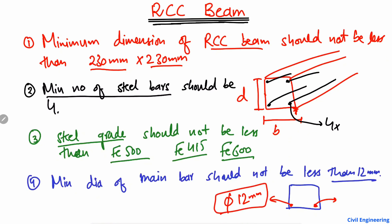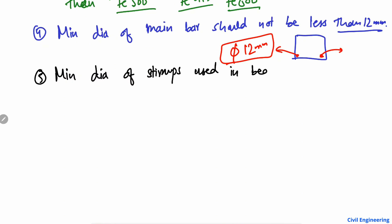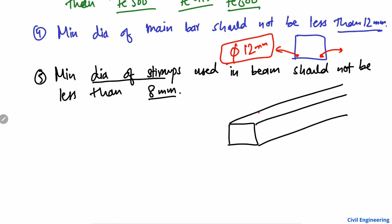The fifth point is that the minimum diameter of stirrups used in the beam should not be less than 8 millimeters. Stirrups are provided vertically around the beam to take the shear stresses. The minimum diameter of these stirrup bars should be at least 8 millimeters.